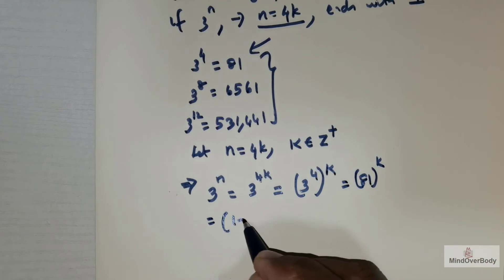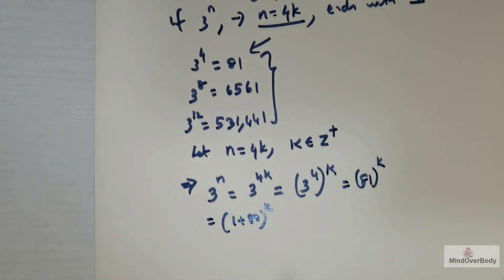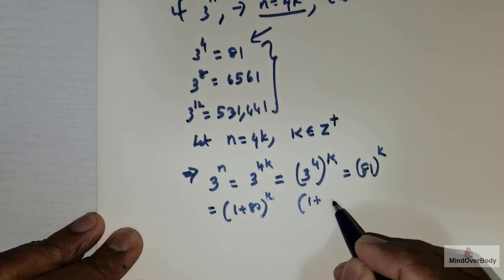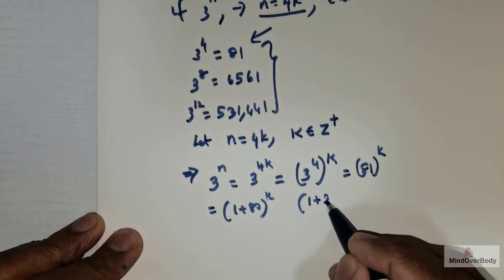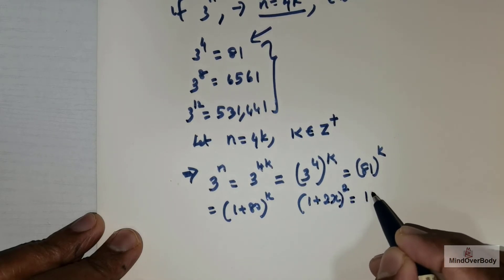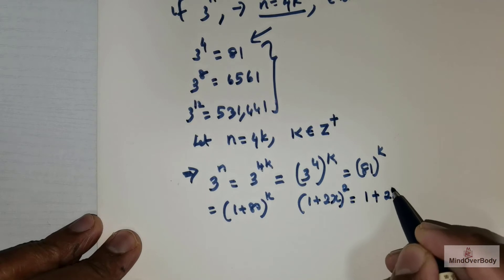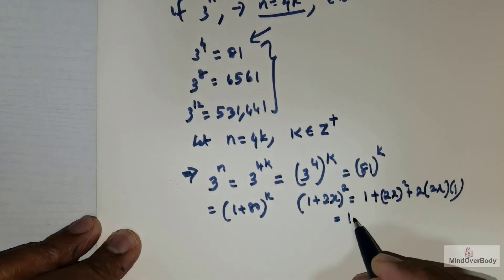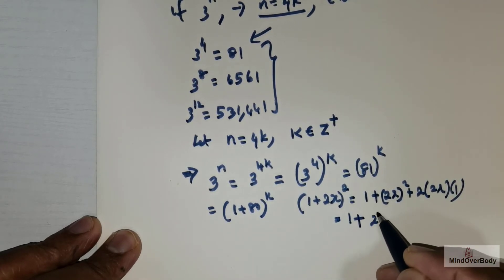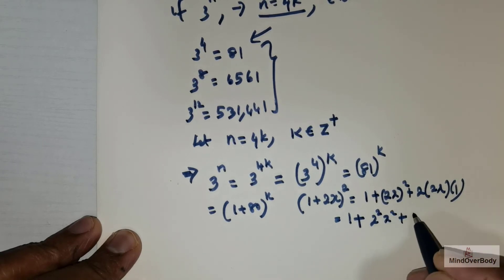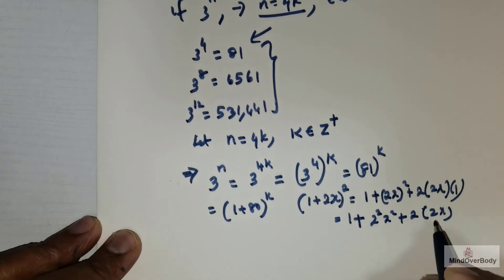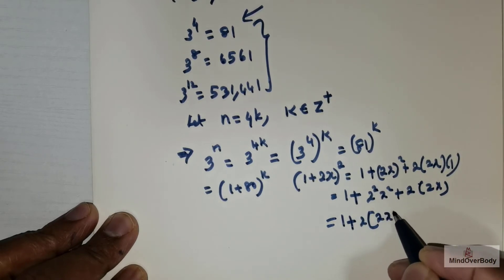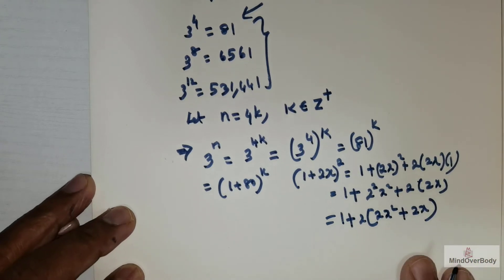Now I can rewrite 81 as (1 + 80), so 81^k becomes (1 + 80)^k. This is very similar to a binomial expansion. If you consider a binomial expansion like (1 + 2x)^2, the expansion is 1 squared plus (2x)^2 plus 2 times 2x times 1, which equals 1 plus 4x^2 plus 4x, and I can factor out 4x to write it as 1 plus 4x(x + 1).